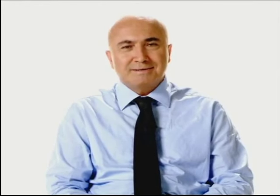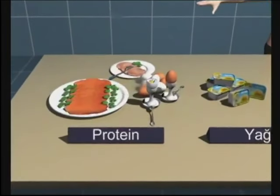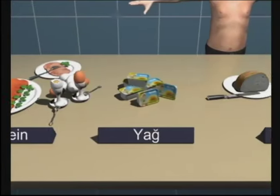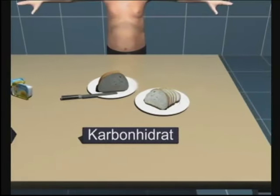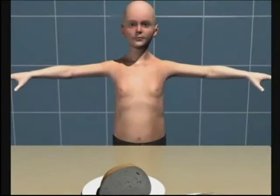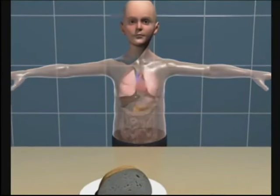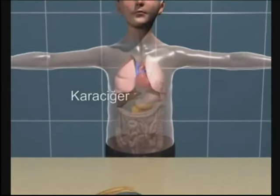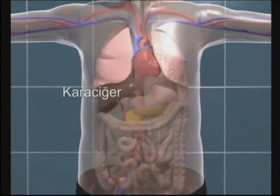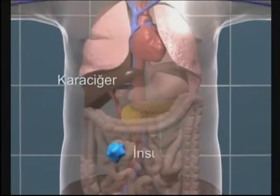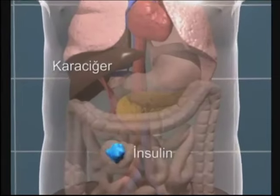İnsülin ne işe yarar diye sorabilirsiniz. Hepimiz her gün birçok besin maddesi yeriz. Kiminin içinde protein, kiminin yağ, karbonhidrat adı verilen besinlerin içinde ise şeker vardır. Şekerli besinler vücudumuzun enerji kaynağıdır. Aldığımız besinlerden veya karaciğerden kana geçen şeker, damarlarımızla hücrelerimizin kapısına kadar taşınır. İşte tam bu noktada insülin adı verilen bir hormona ihtiyaç vardır.